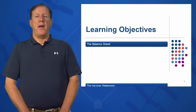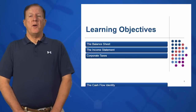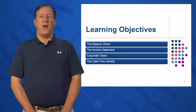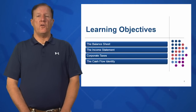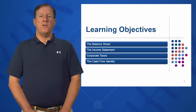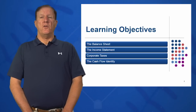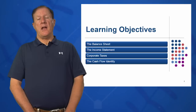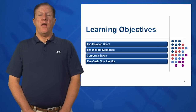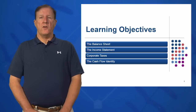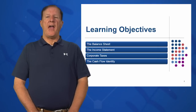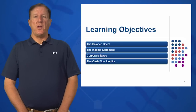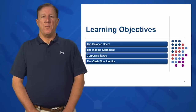Our learning objectives are the balance sheet, the income statement, corporate taxes, and the cash flow identity. We'll also cover corporate taxes — not personal taxes, but corporate tax rates, how they are set, and who controls them. This is a political and congressional process; essentially, tax rates are set by the Congress of the United States. These are the three key financial statements we use each and every day.